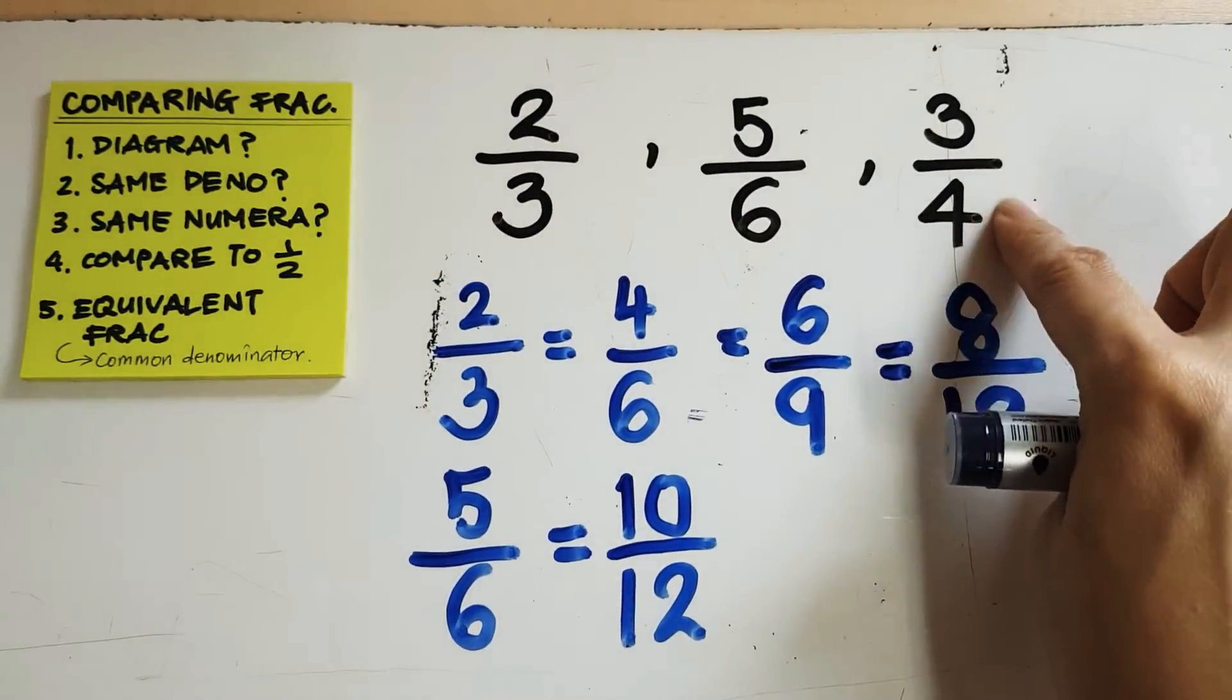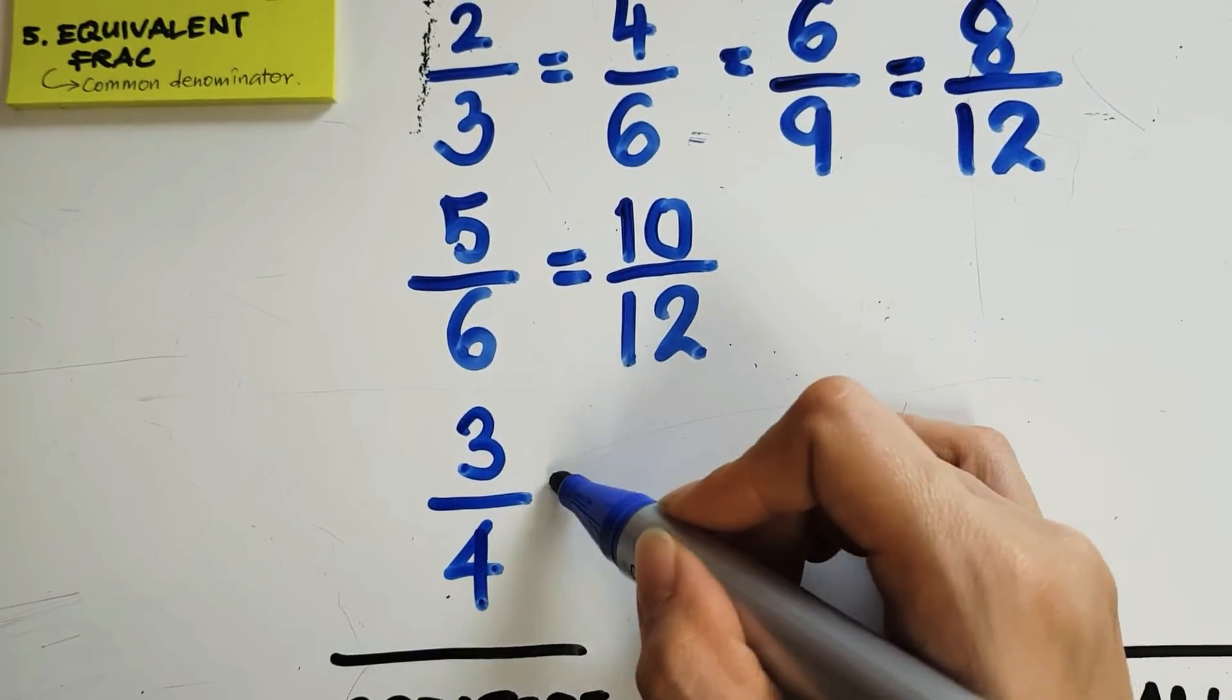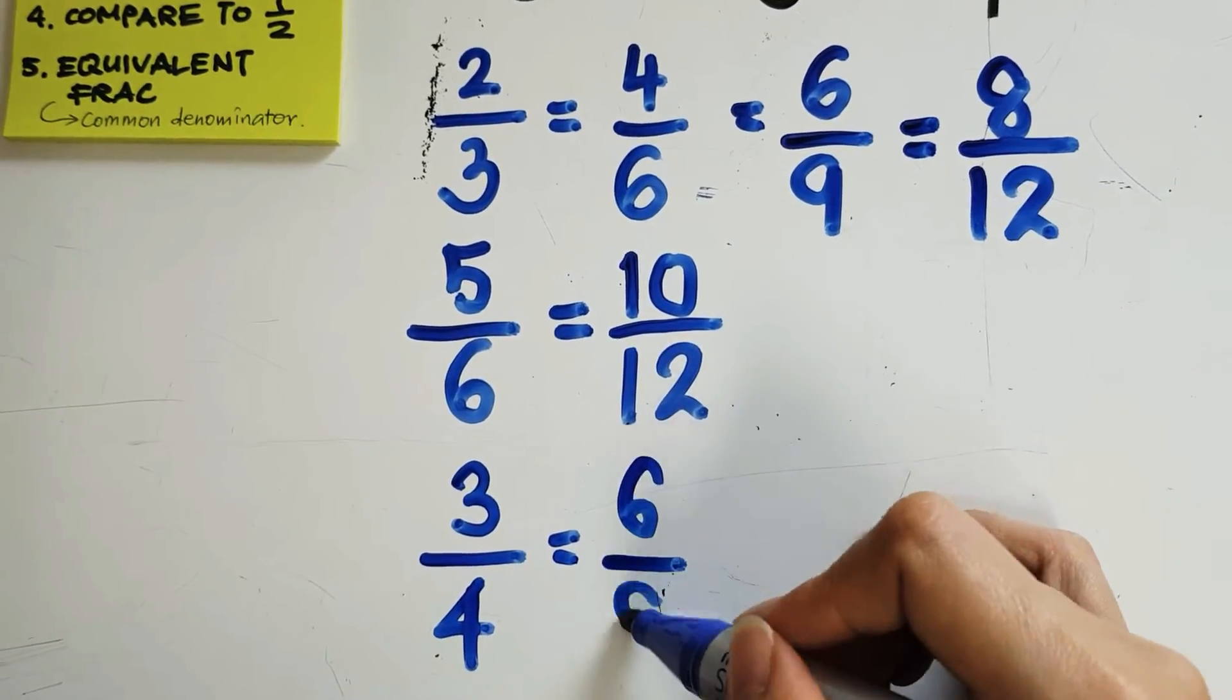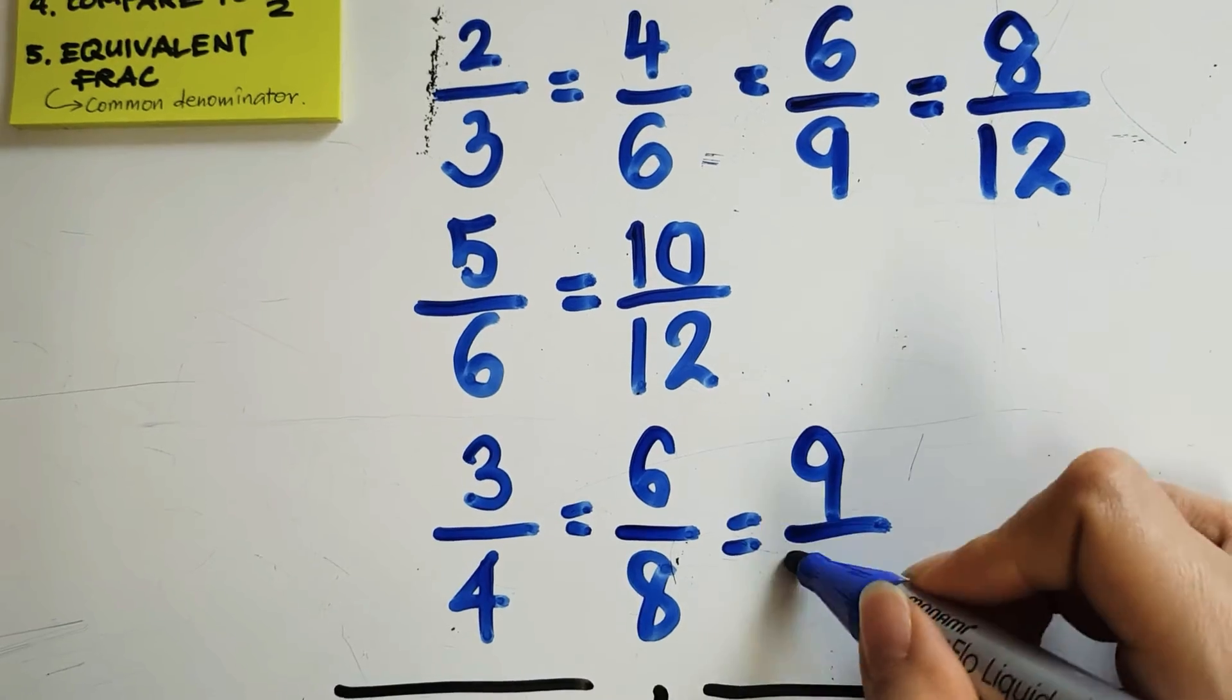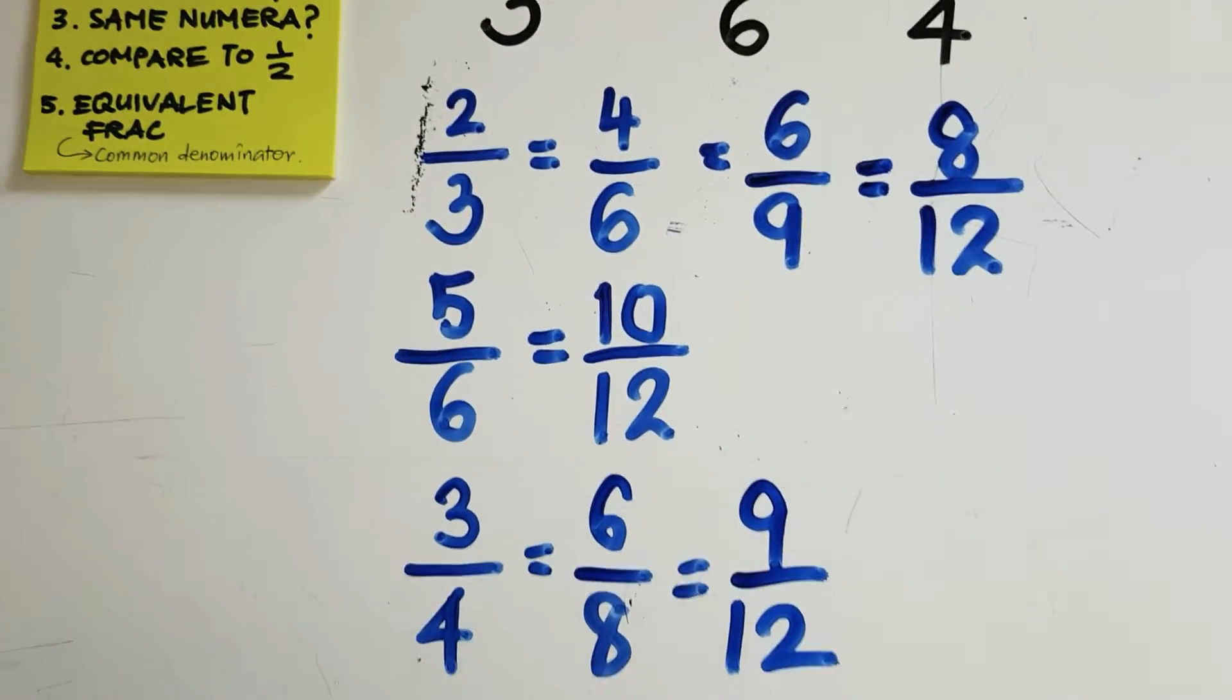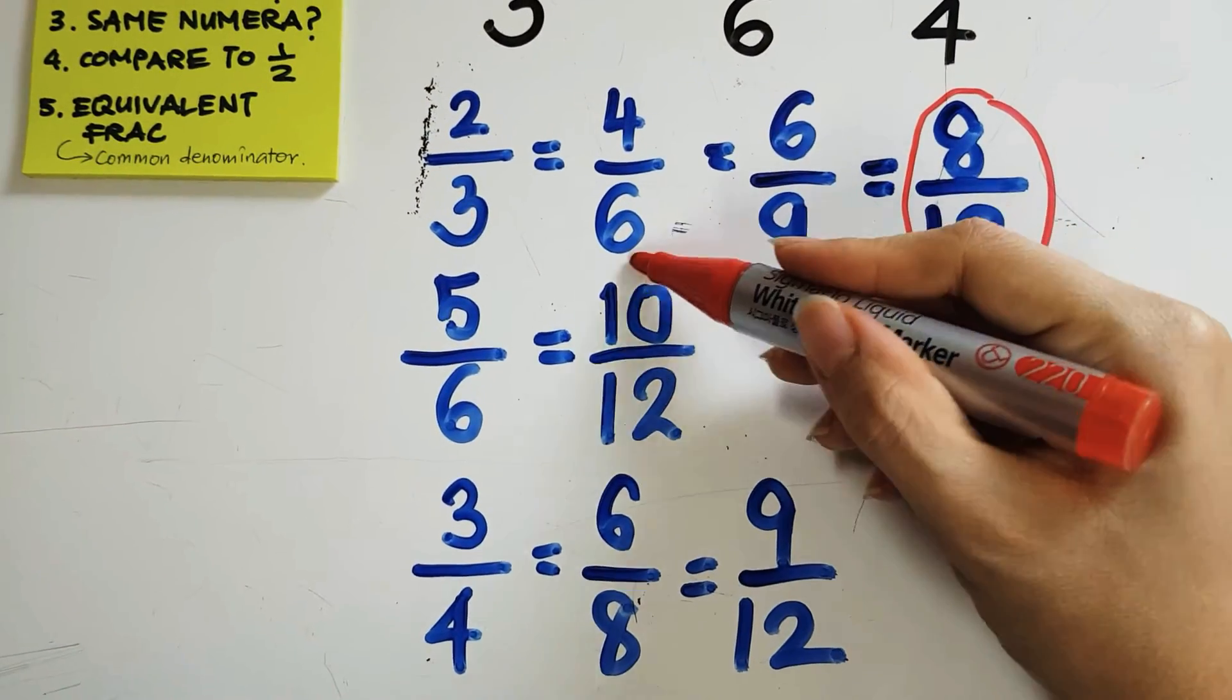Now, I'm going to try 3/4. First equivalent times 2, times 2. Second equivalent times 3, times 3. And I'm going to stop here because as you can see I have these fractions that all have the same denominator.